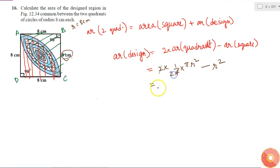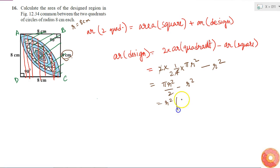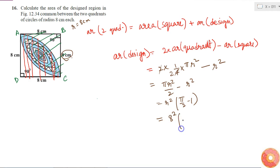Two times one-fourth gives one-half, so the area of design = (πr²/2) − r², which simplifies to r²(π/2 − 1). With r = 8 cm, this becomes 8² × (π/2 − 1).